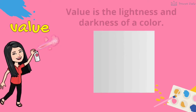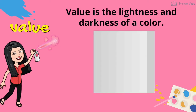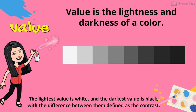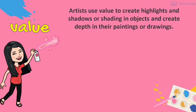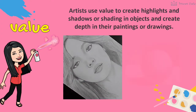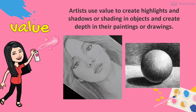Sixth is value. Value is the lightness and darkness of a color. The lightest value is white, and the darkest value is black, with the difference between them defined as the contrast. Artists use value to create highlights and shadows or shading in objects, and to create depth in their paintings or drawings.